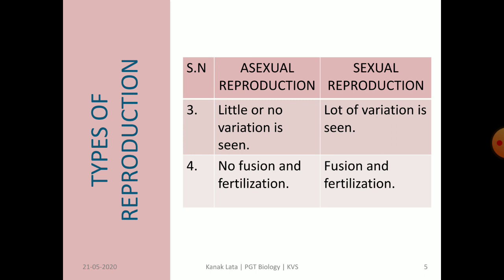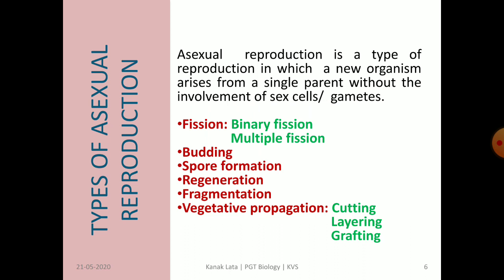In asexual reproduction, there is no fusion and fertilization, whereas in sexual reproduction, there is fusion and fertilization. Since in asexual reproduction there is no formation of gametes, no fusion and no fertilization takes place. But in sexual reproduction, fusion and fertilization do take place.